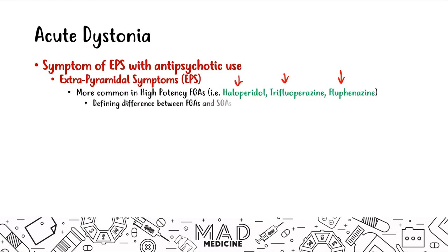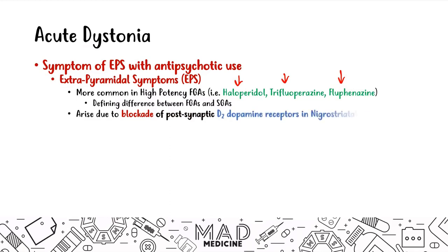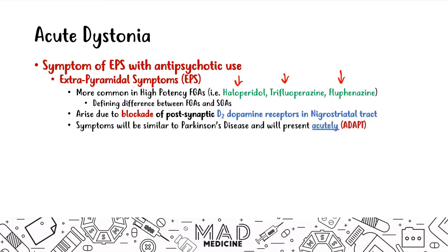This is the main difference between first-gen and second-gen antipsychotics, so keep that in the back of your mind. All of this occurs due to blocking the postsynaptic D2 dopamine receptors in the nigrostriatal tract. The symptoms for EPS are going to be a Parkinson's disease-like presentation, and it's all going to present acutely. One thing to understand is why this is all happening like Parkinson's disease — it's because you are blocking the D2 receptors.